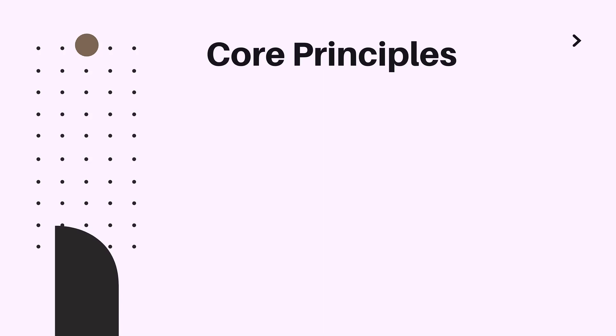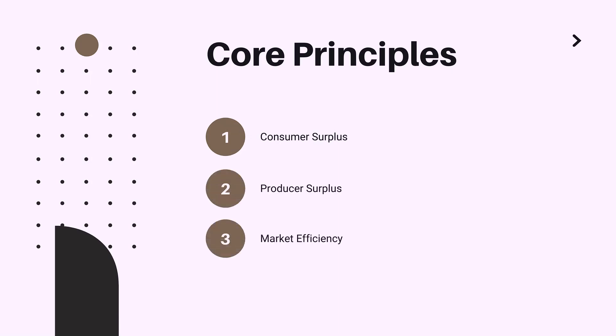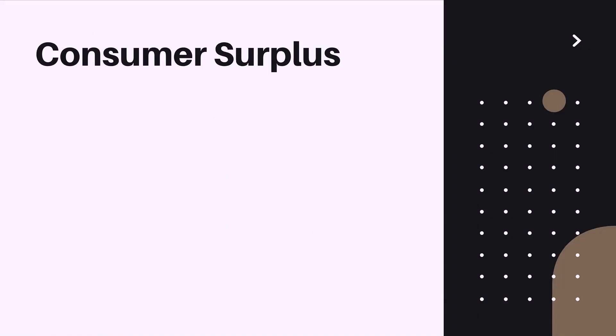Hi everyone, welcome to the review session of chapter 7: Consumers, Producers, and the Efficiency of Markets. Today we are going to cover three core concepts: consumer surplus, producer surplus, and market efficiency.